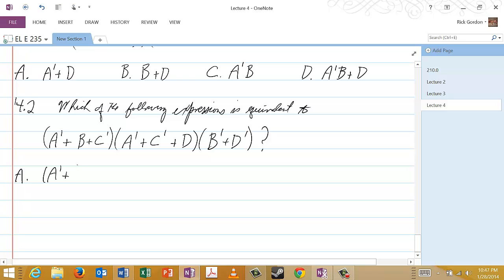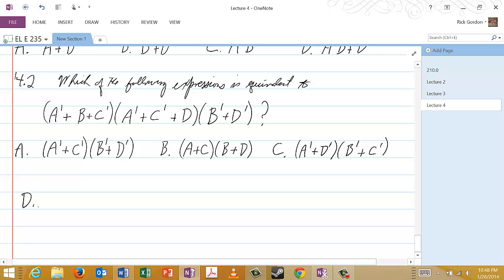Choice A is A'B or D'B or D', choice B is A'B or D'B or D'B, choice C is A prime or D prime ended with B prime or C prime, and the final choice for this problem will be A prime or C ended with B prime or D.